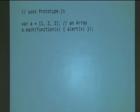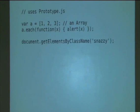For example, they give you this each method on an array, much easier than iterating over an array's elements by hand. They also had an early implementation of the getElementsByClassName method, which finds all the HTML elements in the current page that have some particular CSS class.